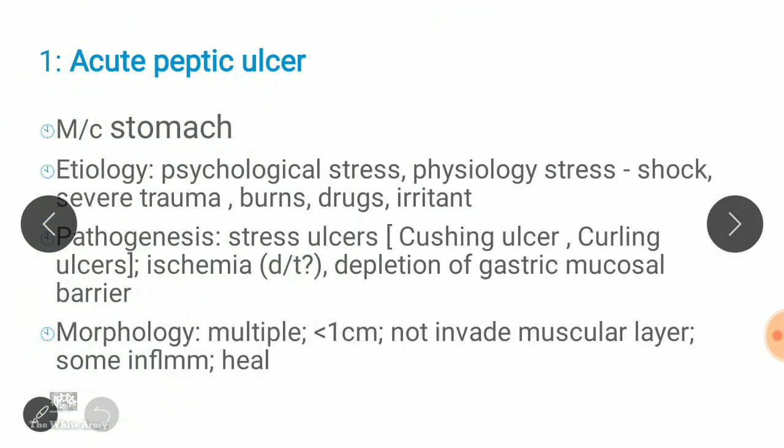There are two types of peptic ulcers: acute and chronic. Acute ulcers occur mainly in the stomach, whereas chronic ulcers can be both gastric and duodenal. Acute ulcers are actually stress-type ulcers, mainly seen in the stomach. Etiology includes physiological stress — such as shock, severe trauma, burns, and drugs — and psychological stress.